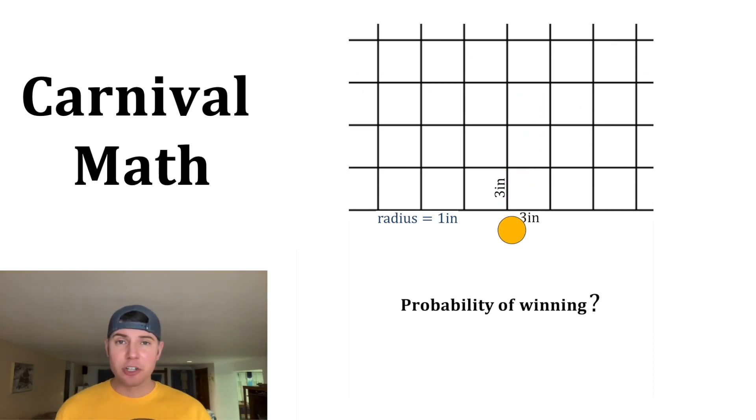I think it's easiest if we think of the token as a center and a radius of one. Our goal is to make sure that the center of our token is more than one inch away from the edges of the grid.